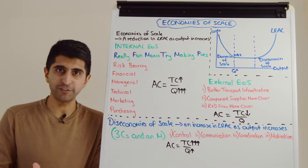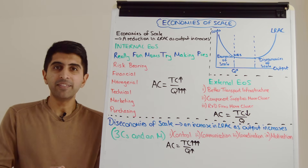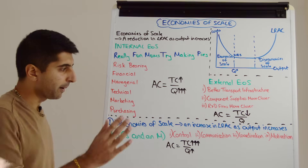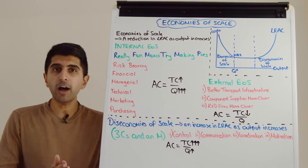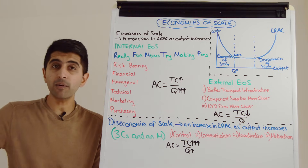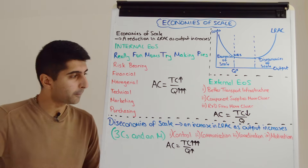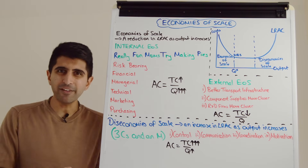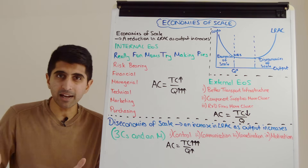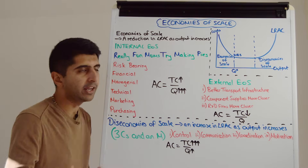With control: as a business gets larger it becomes much more difficult for managers to control the workforce because there are so many more workers. If workers know managers aren't really watching what they're doing, they're going to slack off more, impacting productivity, meaning total cost rises faster than quantity and pushing up average costs. With communication: it's much harder to spread messages through the company — either from CEOs and directors down to workers on the shop floor, or the other way around. Workers may have great ideas to improve efficiency but can't get messages to the top quickly, impacting productivity.